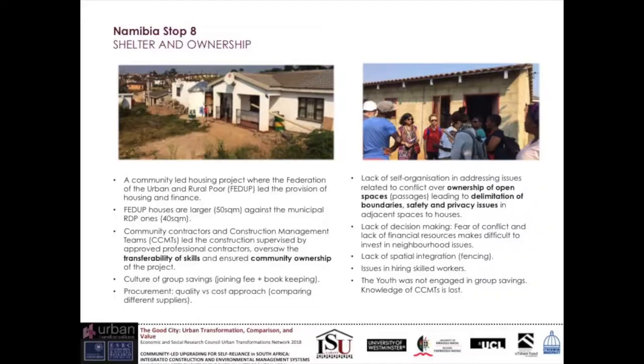I would now like to quickly give some messages about the three case studies and some lessons learned about ownership. One of our case studies is Namibia Ostopade, which is now a completed project, where the Federation of the Urban and Rural Poor — an NGO under SDI lines — led the provision of 96 houses and also enabled a culture of group savings and group financing.